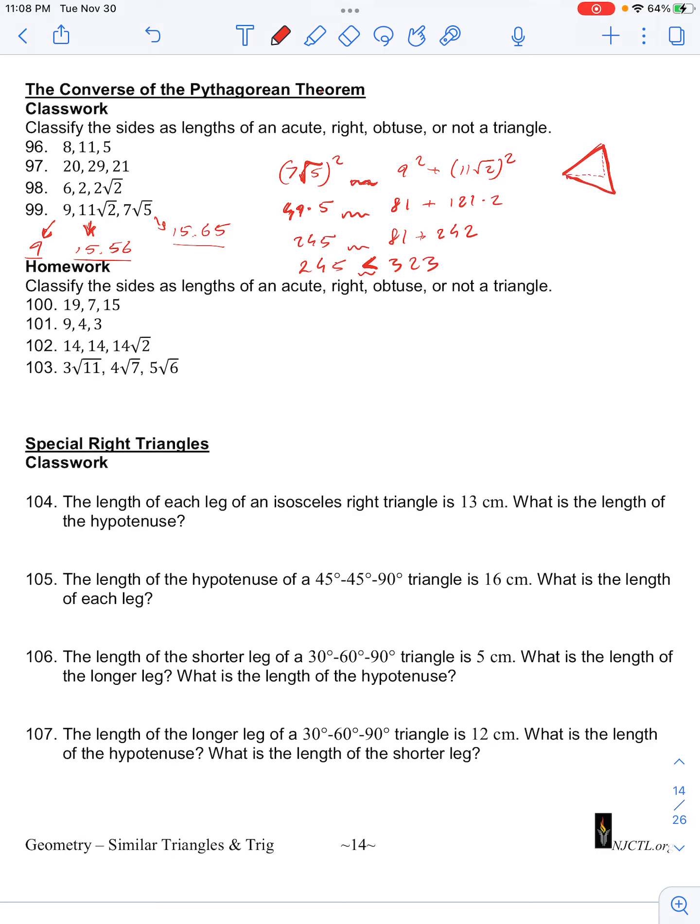Whereas a right triangle would be something like that, with a right angle here. So our sides are longer than what they're supposed to be. And so that means that this angle here will be an acute angle.